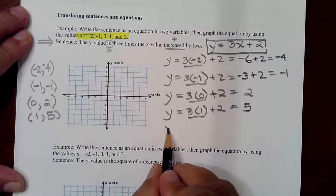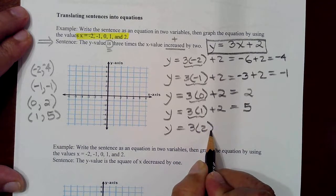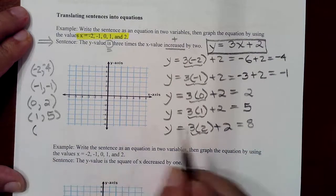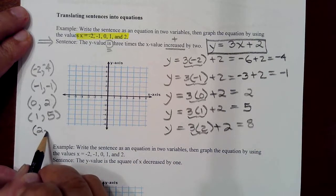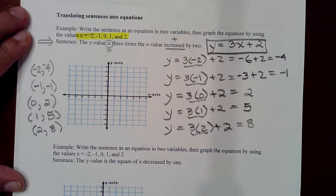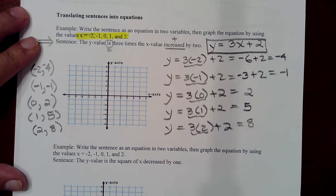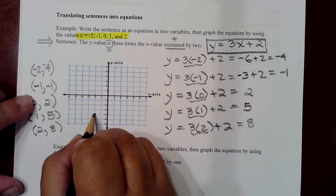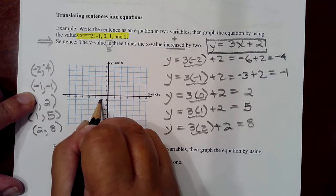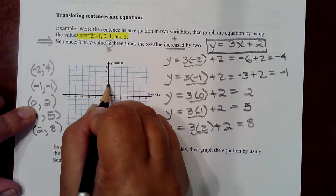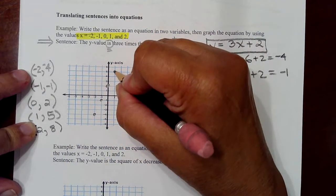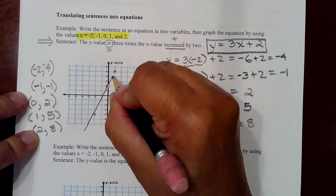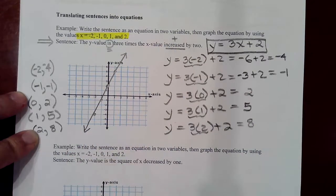Last number to plug in is 2: 3 times 2 plus 2 is 6 plus 2, which is 8. So when plugging in 2, you get 8. This is a linear equation, so expect a line when you plot these points. You're plotting (negative 2, negative 4), (negative 1, negative 1), (0, 2), (1, 5), and (2, 8) — which will kind of run off the grid. And there's your line.